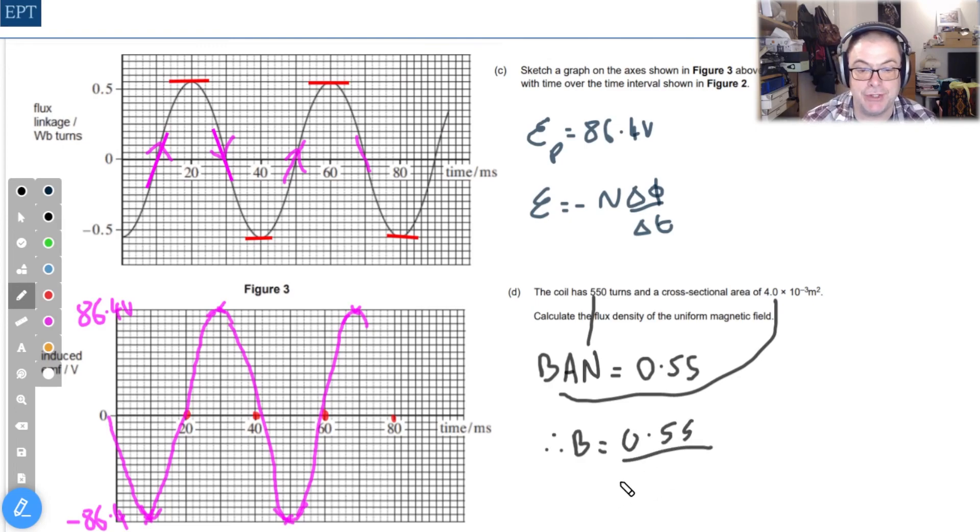And since we have this maximum value of flux linkage from our graph we can easily get what B is, the flux density, by just aligning up the values for A and N. So therefore B is going to be equal to 0.55 over 550 turns times 4 × 10^-3 meters squared. Shoving that into your calculator you get 0.25 teslas.